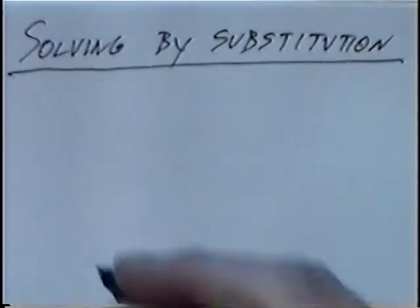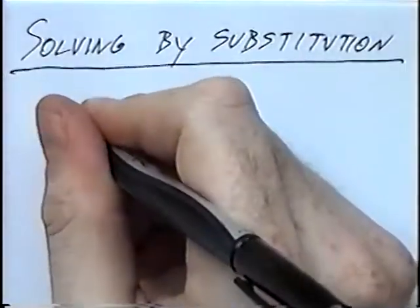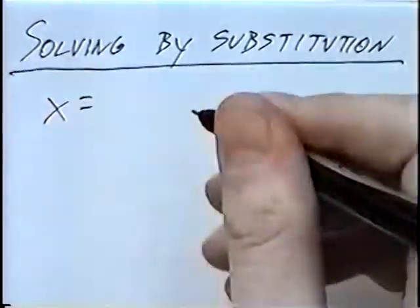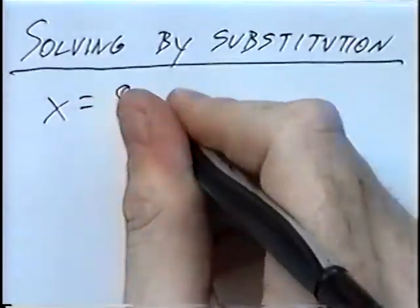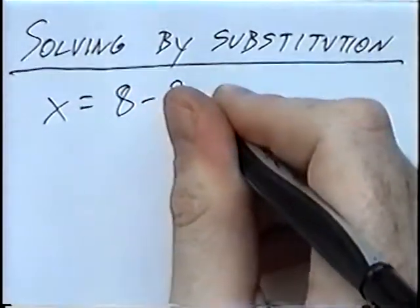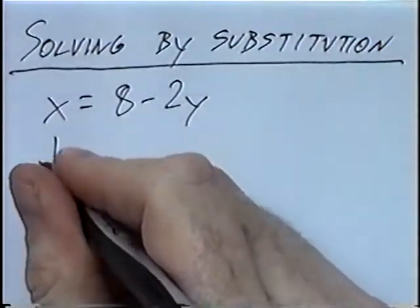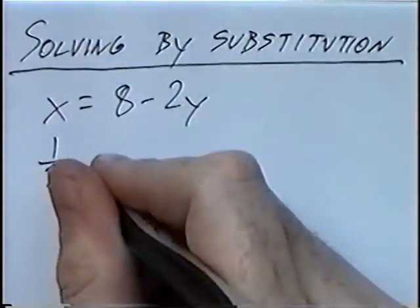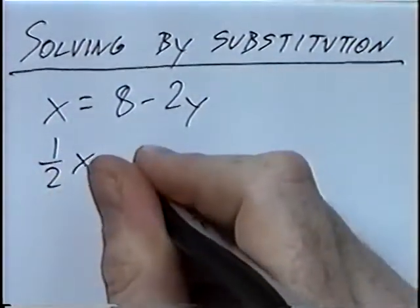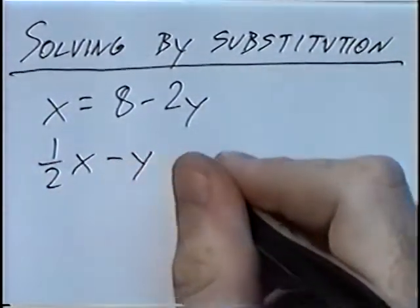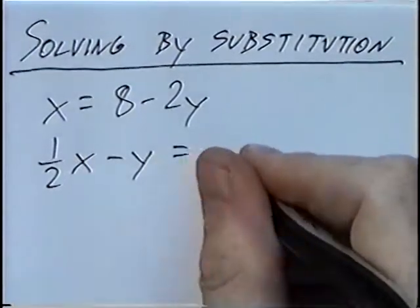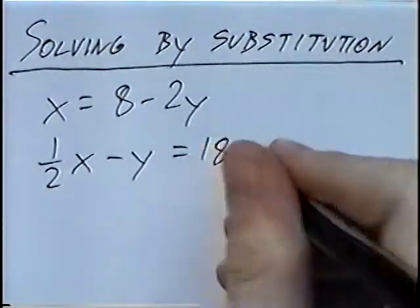First equation: x equals 8 minus 2y. And second equation: one half x minus y equals 18.